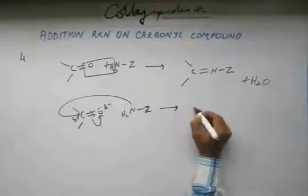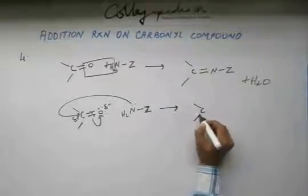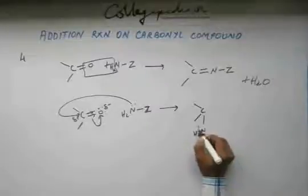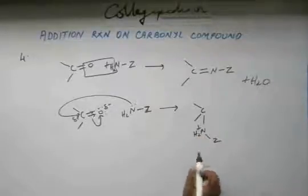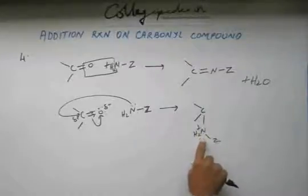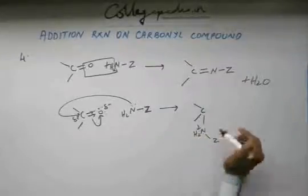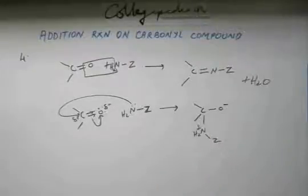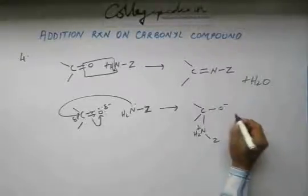So when this happens, what do you have? This N-H2-Z is going to form a bond with Carbon. So the plus charge is going to develop on Nitrogen because Nitrogen has given its Electron to Carbon. And Oxygen is going to gain a negative charge because the Electron of the Pi bond has gone into the orbital of Oxygen.